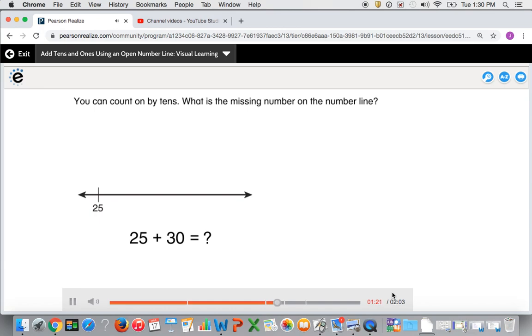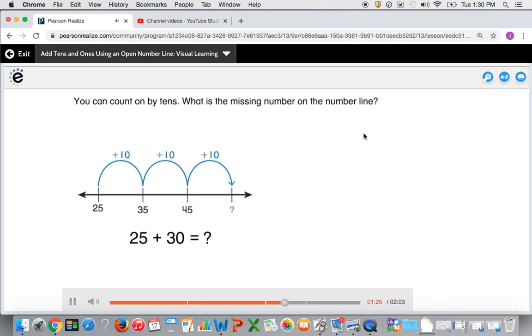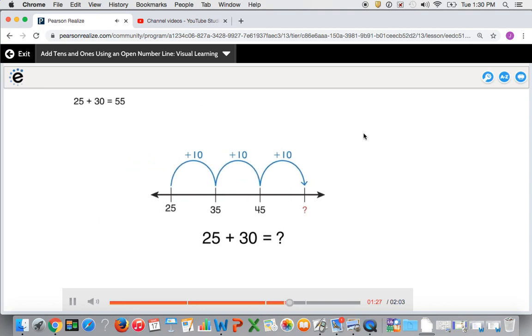What is the missing number on the number line? Select your answer. 25 plus 30 equals 55.